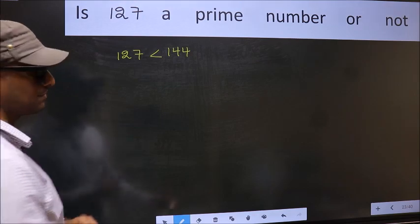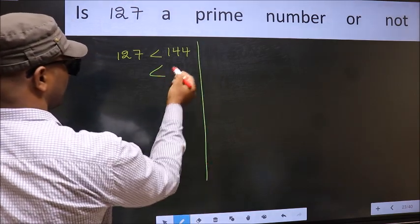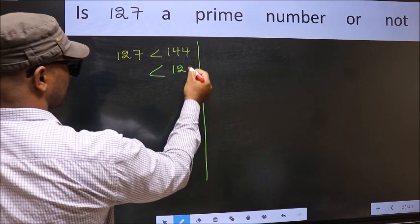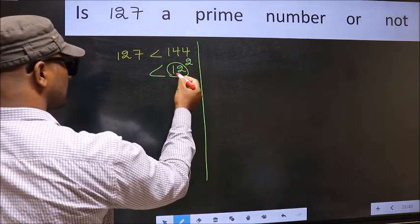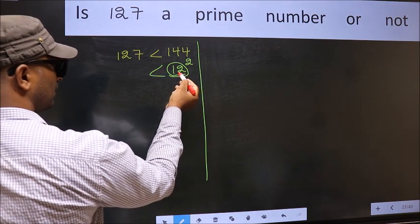Next, 144 is nothing but 12 squared. Now you write all the prime numbers less than this number 12.